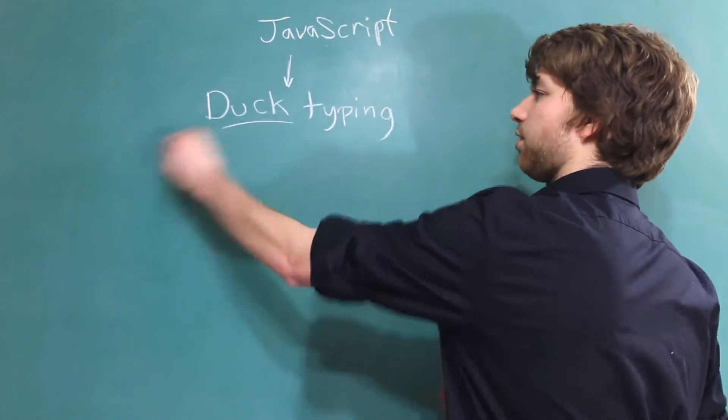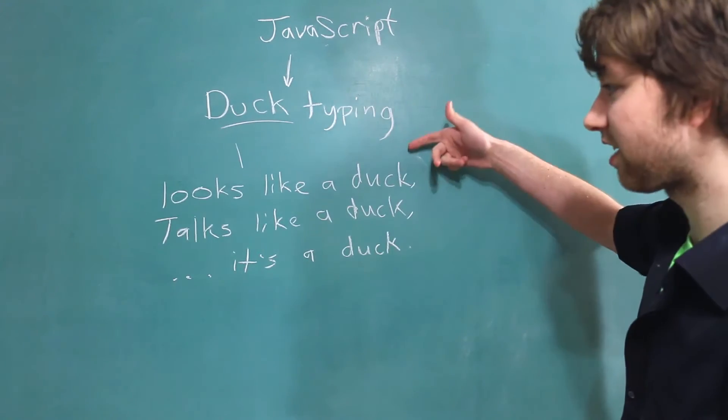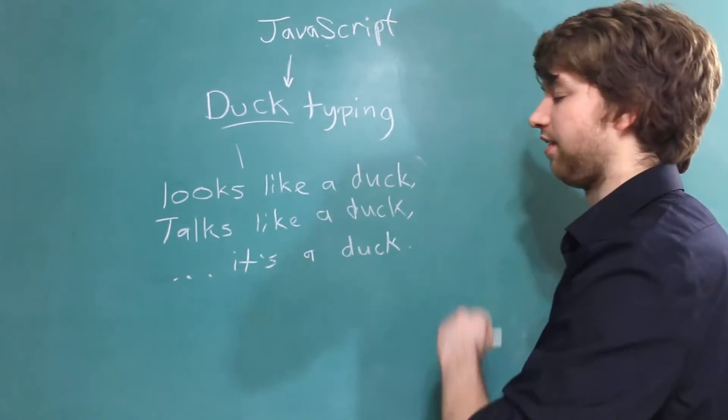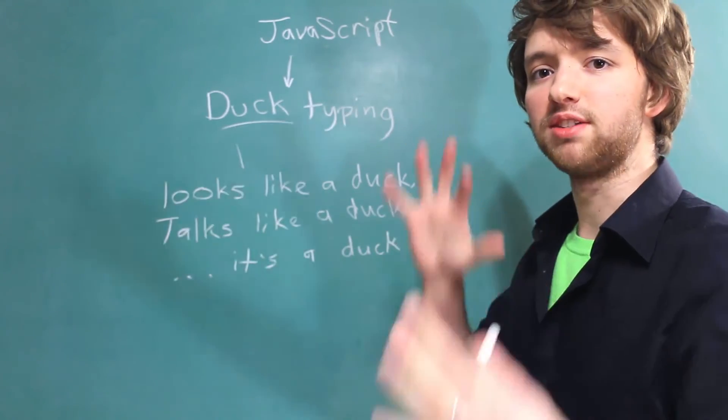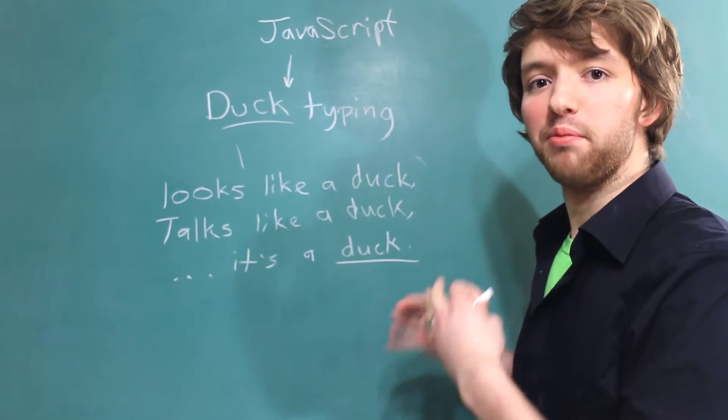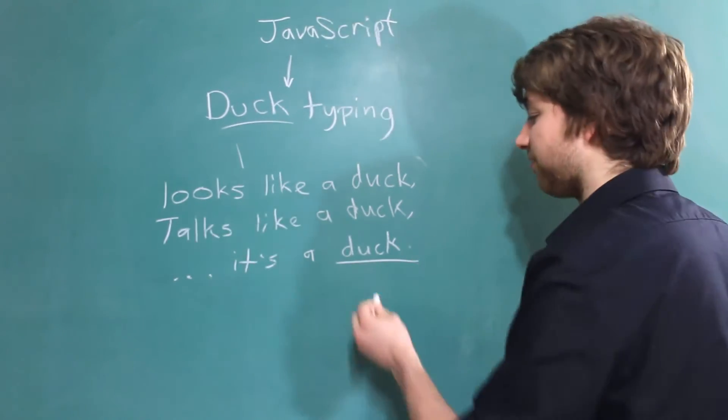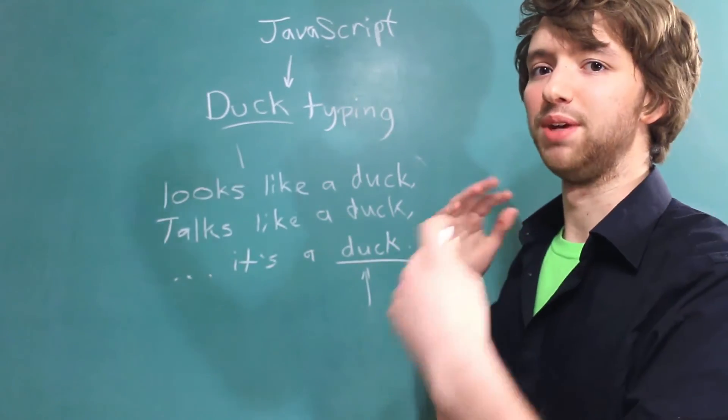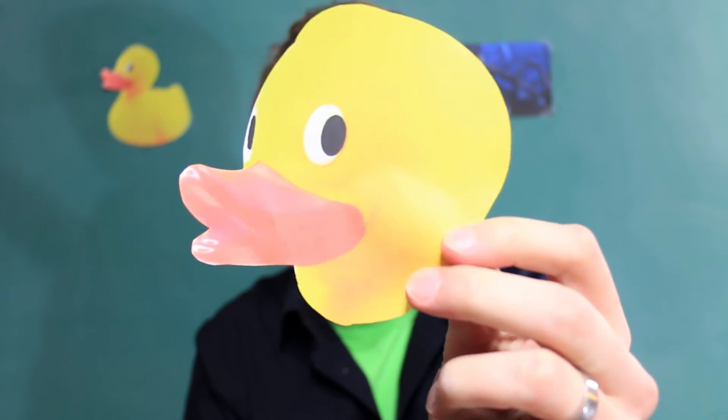So why in the world is it called duck typing? Well the philosophy goes if it looks like a duck, if it talks like a duck, it's a duck. The first benefit of this is that a lot of different types can be treated the same because you can treat everything like a duck. But there's a downside in that not everything is going to qualify as a duck in whatever sense that means. Whether it be it being a number or a certain type of number. Quack quack.